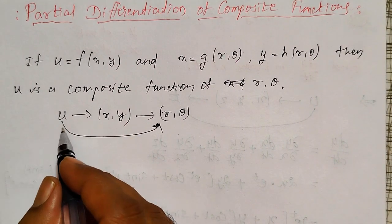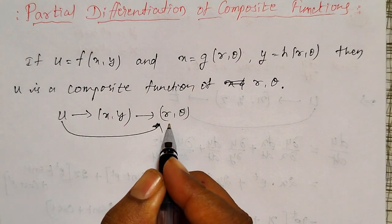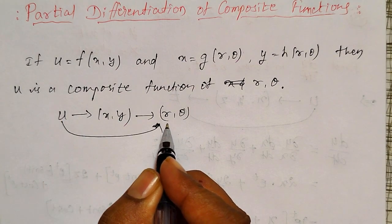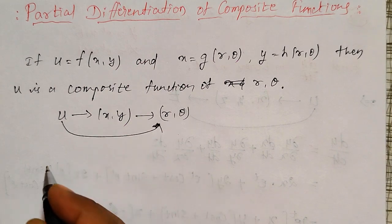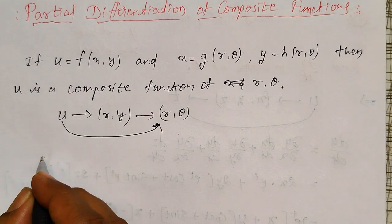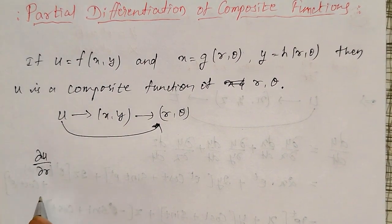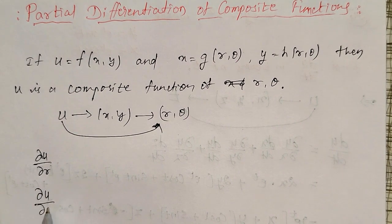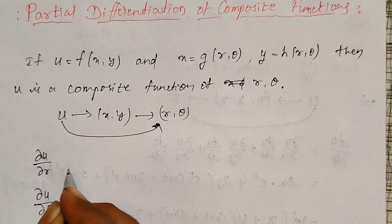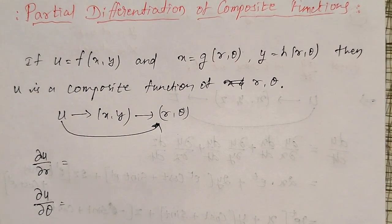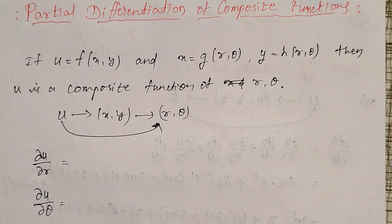Now if u is indirectly a function of r and θ, then there exist two partial derivatives: ∂u/∂r and ∂u/∂θ. Then how do we find out ∂u/∂r and ∂u/∂θ?